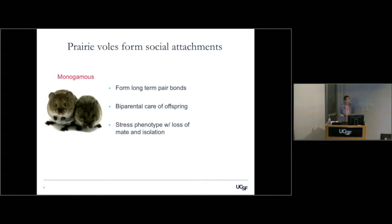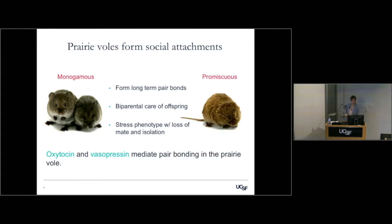They also show a very significant stress phenotype with loss of a mate or with isolation. A lot of what we know about their behavior comes from comparing to very closely related rodent species that are promiscuous. The meadow vole doesn't have any of these behaviors and spends most of its time in isolation. Very early work done by Tom Insel, Sue Carter, and other groups started to tell us what was happening in the brain mediating pair bond formation in prairie voles versus meadow voles.